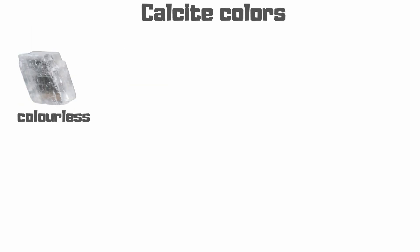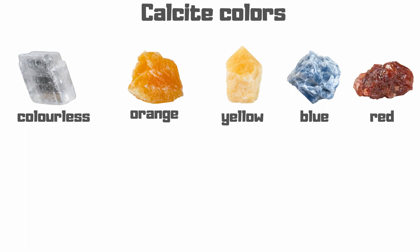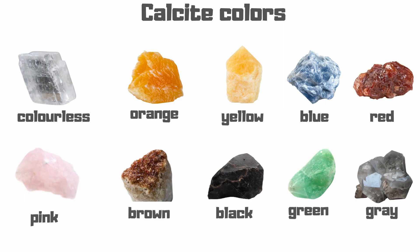First of all, let's see the difference in their colors. Calcite is colorless, white, and with light shades of orange, yellow, blue, red, pink, brown, black, green, and grey.